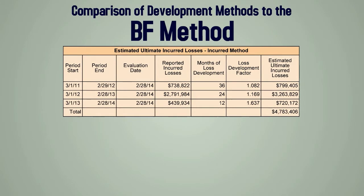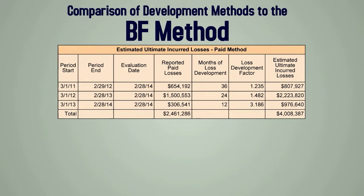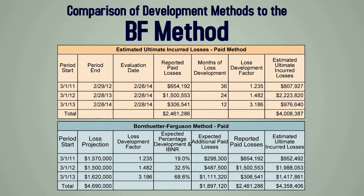Here we show the incurred method, which is commonly used, as compared with the Bornhuter-Ferguson Method. On the March 13th period start row in the Bornhuter-Ferguson method, we show all the numbers just computed in the previous four-step process. If you have additional questions, contact us at Sigma by emailing support@sigmaactuary.com. Here we also show the paid method and how the computations using the paid method align against the Bornhuter-Ferguson method using reported paid losses.